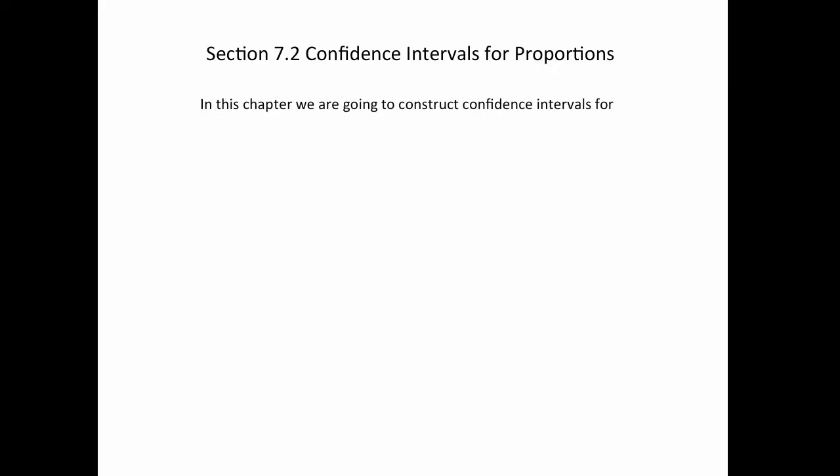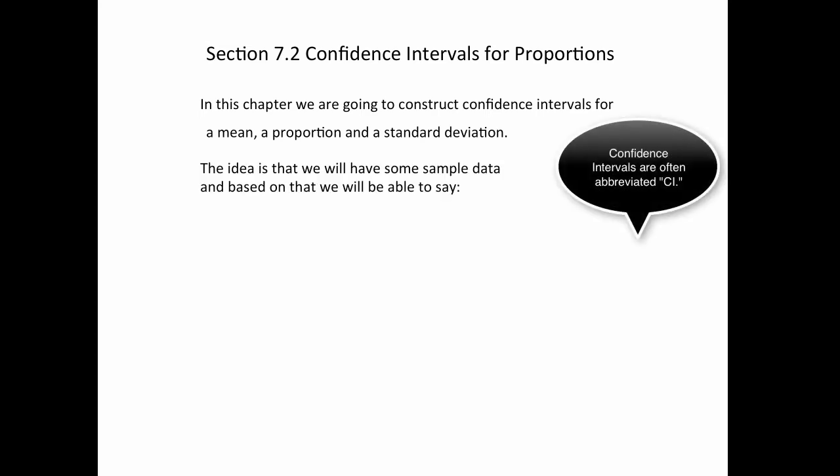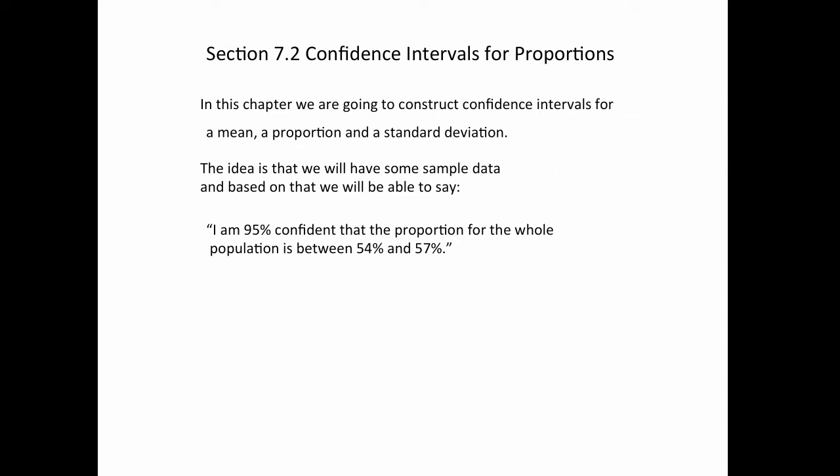Chapter 7 is about confidence intervals. We're going to be making a confidence interval for a mean, a proportion, and a standard deviation. The idea of a confidence interval is that you're going to have some data, some type of sample data. Of course, we can't be 100% sure that that's true for the whole population because it's based just on a sample.